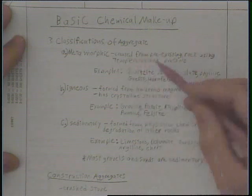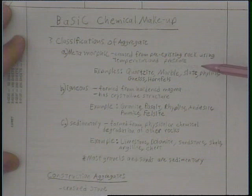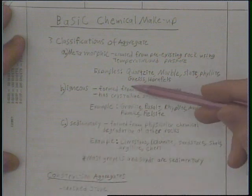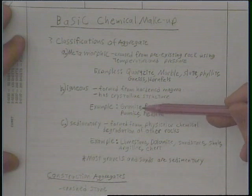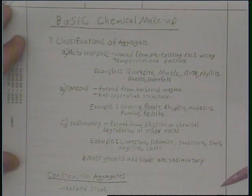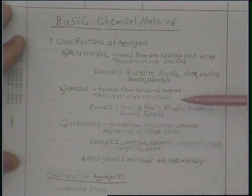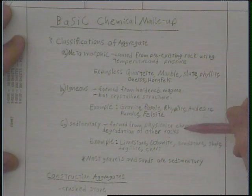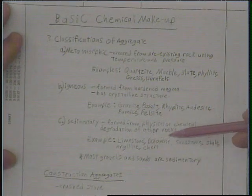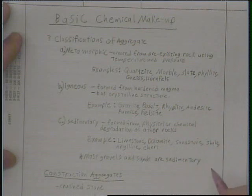Metamorphic rock is created from pre-existing rocks using temperature and pressure — this is where marble and slate come from. Igneous rock is formed from hardened magma and usually has a crystalline structure; granite is an igneous rock. Sedimentary rock forms from physical or chemical degradation of rocks — this is where limestone, dolomite, sandstone, shell, and even chert are classified. Most gravels and sands are usually sedimentary.